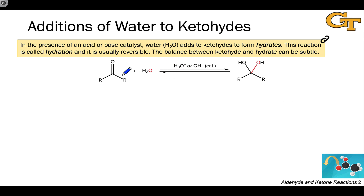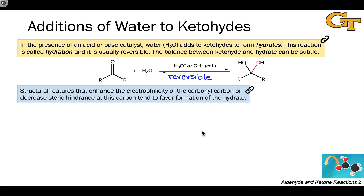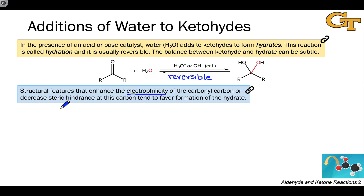In reverse, this reaction is simply the elimination of water from the hydrate, also facilitated by acid or base catalyst. In general, because all we're doing is replacing a C=O pi bond for a C–O sigma bond, the balance between the two sides of the reaction is subtle and the reaction is reversible. Structural features that enhance the electrophilicity of the carbonyl carbon or decrease steric hindrance at this carbon — these two key factors — will encourage formation of the hydrate, making it more stable and more favored relative to the keto form.